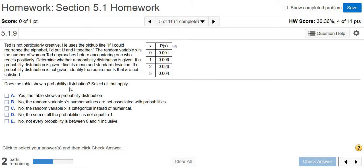Does the table show a probability distribution? So the first thing we should do is maybe add up these numbers and make sure we get 1. I'm pretty sure we're not going to get 1 if you add these up, but let's go ahead and do it.